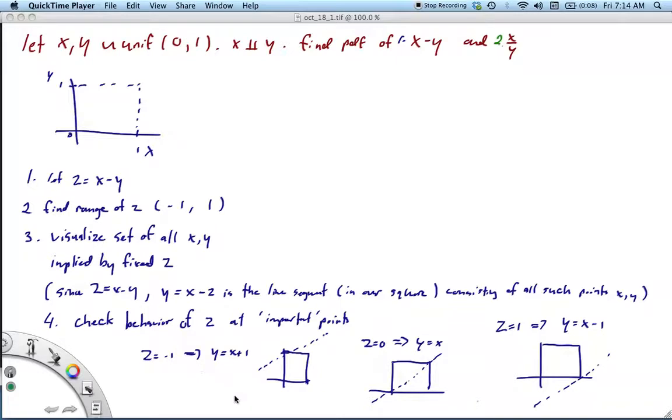And I put important in quotes because it might not be entirely clear what those points are. I've done the problem, so I know that we can essentially think about zones of activity for how our area function is going to be behaving. So it's kind of a spoiler alert. But it's good to see what's going on at the extremes. So if Z is equal to minus 1, then Y is equal to X plus 1, and we'd be looking at this line here.